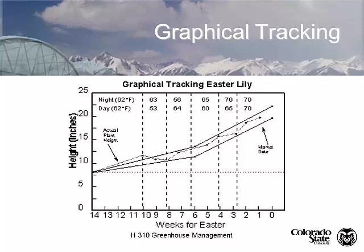This is what's called a graphical track, a targeting tool used for Easter lilies and poinsettias. We have a market window and a plant height set by vendors—big box stores have a specific plant height for their shelf, while church clients may want taller plants. These charts go from 14 weeks back to 0, with week 1 being Palm Sunday. You can use DIF temperatures or plant growth regulator scheduling to keep plants within the specific target height window.